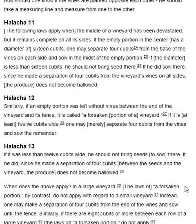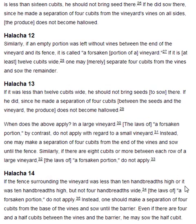Similarly, Halakha 12. If an empty portion was left without vines between the end of the vineyard and its fence, it is called a forsaken portion of a vineyard. If it is at least twelve cubits wide, one may merely separate four cubits from the vines and sow the remainder.